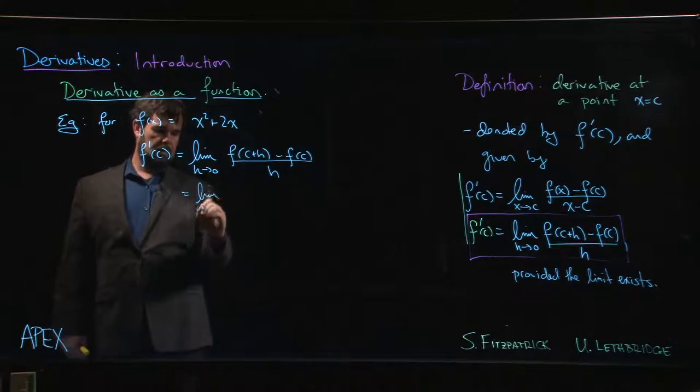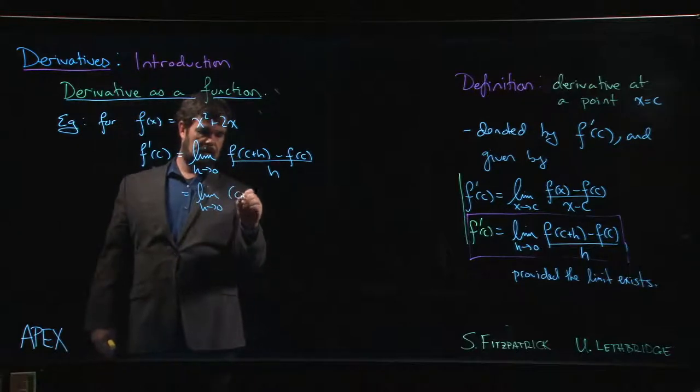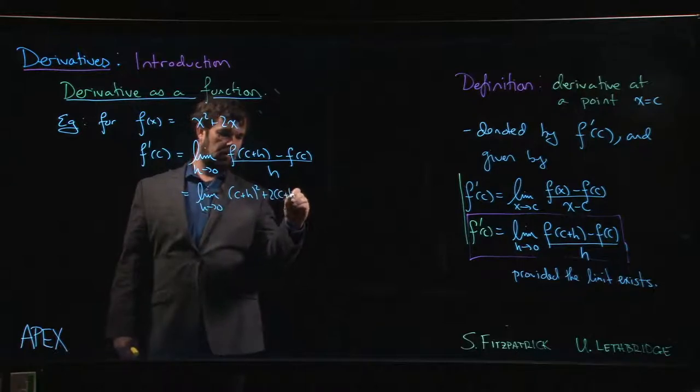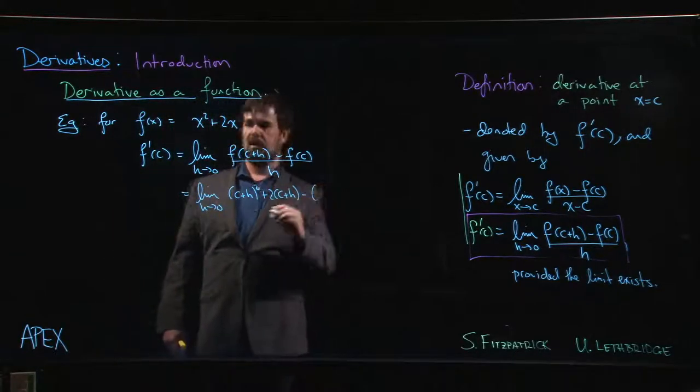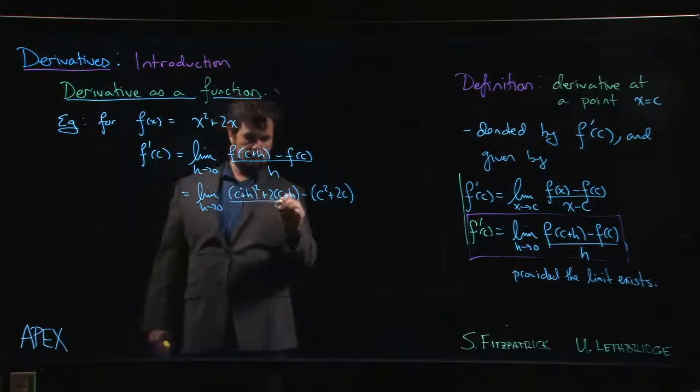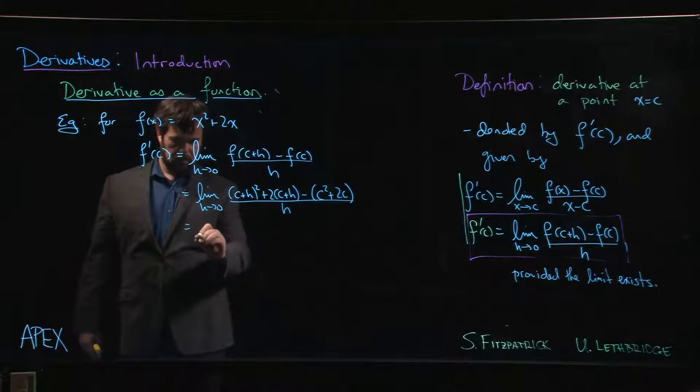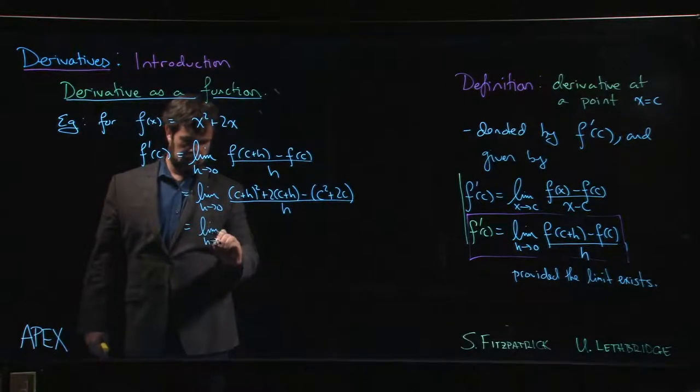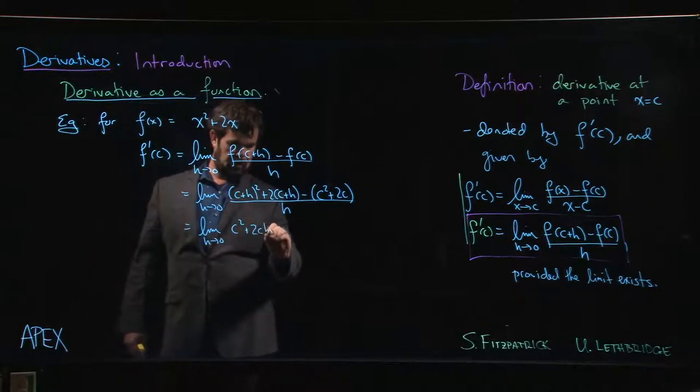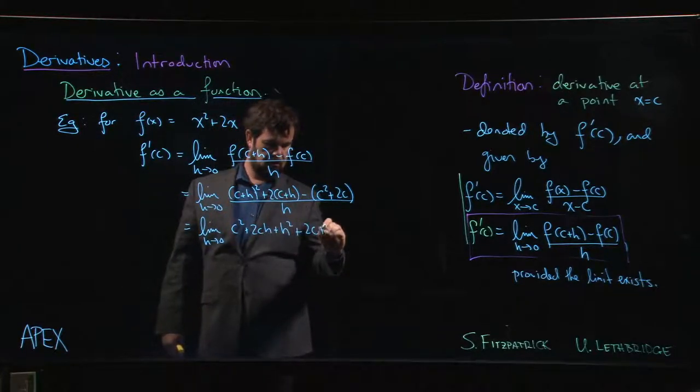And what do we get? We get the limit as h goes to 0. This is going to be c plus h squared plus 2 times c plus h, subtract, so we put x equal to c, c squared plus 2c, whole thing divided by h. And we can even simplify this if we want.